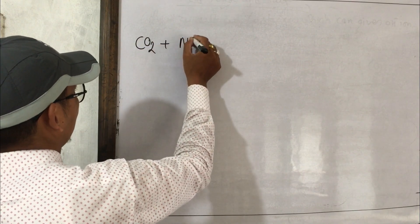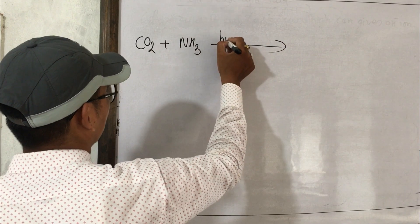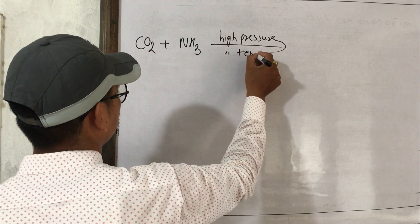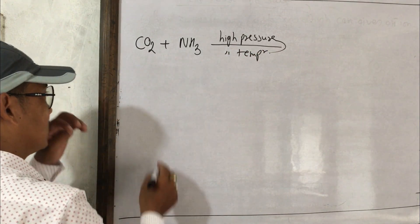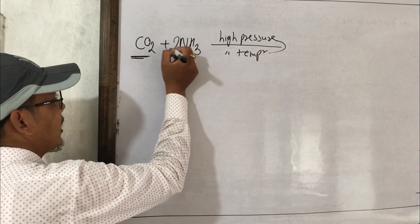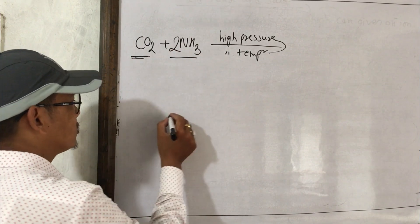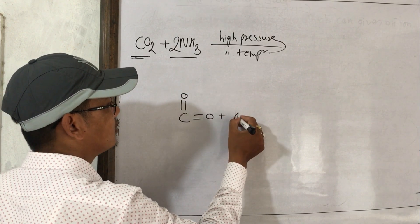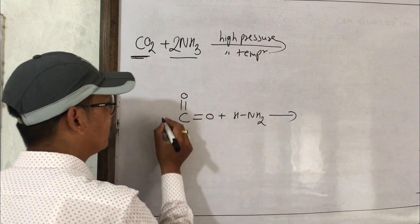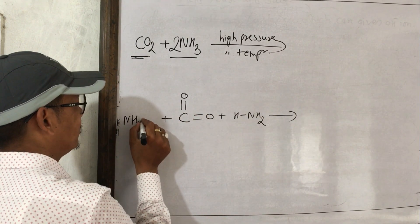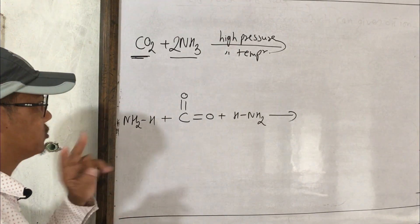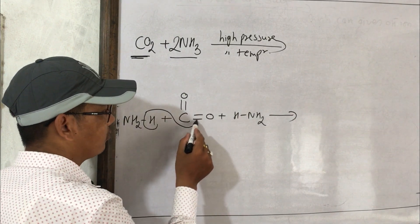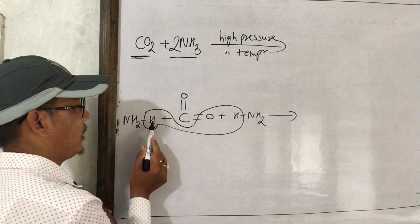CO₂ reacts with ammonia gas at high pressure and high temperature. CO₂ plus 2NH₃ react together. Carbon, oxygen, and hydrogen from H₂O combine in this reaction.